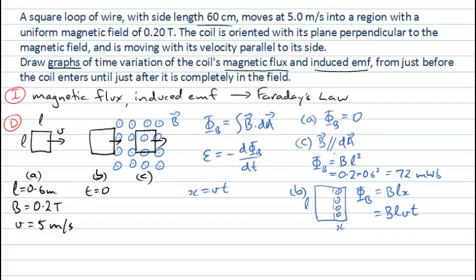We can now see what's going to happen to the magnetic flux and the induced EMF as time progresses. Everything up to time zero has zero flux. At time zero we start to increase the flux according to B·L·V·t. The coil transitions from situation B to C when it completely enters the field — that takes a time equal to L divided by V: 0.6 m ÷ 5 m/s = 0.12 seconds.